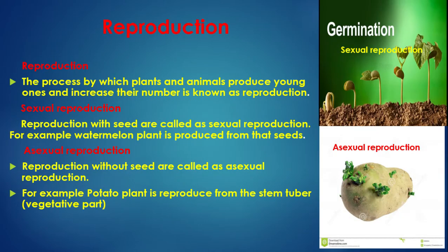Reproduction: The process by which plants and animals produce young ones and increase their number is known as reproduction. Sexual reproduction: Reproduction with seed is called sexual reproduction. For example, a watermelon plant is produced from its seed. Asexual reproduction: Reproduction without seed is called asexual reproduction. For example, a potato plant is reproduced from the stem tuber, which is a vegetative part.